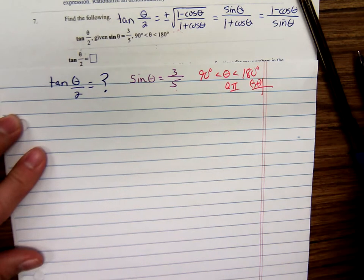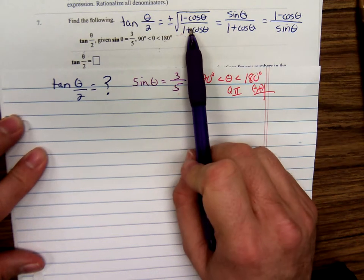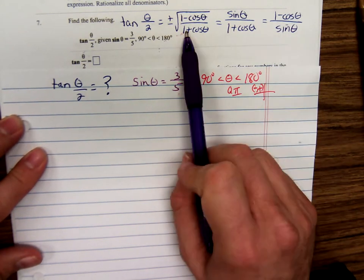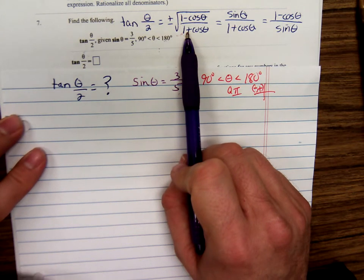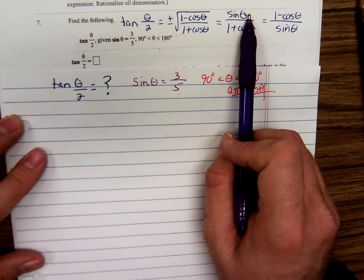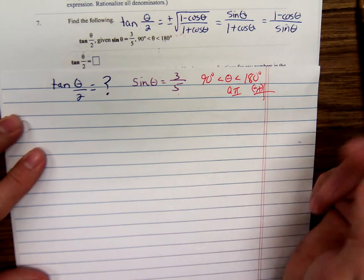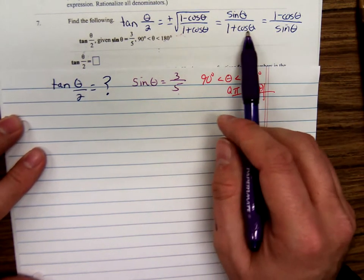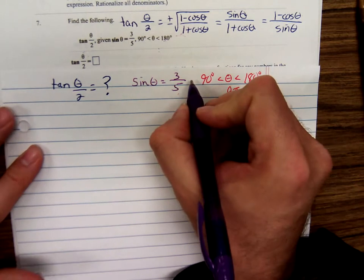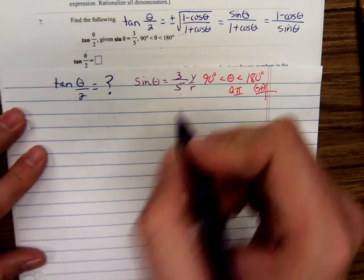We're going to use one of these identities for tangent theta over 2: either plus or minus the square root of (1 minus cosine theta) over (1 plus cosine theta), or sine theta over (1 plus cosine theta), or (1 minus cosine theta) over sine theta. No matter what, we need to know cosine theta. So I'm going to think of sine theta as y over r.